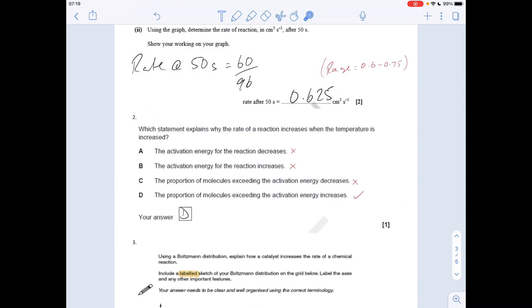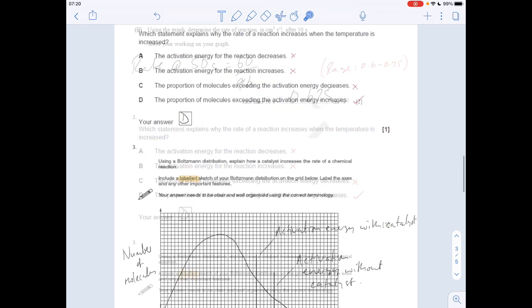Which statement explains why rate of reaction increases when temperature is increased? Activation energy doesn't change when you change the temperature—it's only a catalyst that changes activation energy, so the first two are wrong. The proportion of molecules exceeding the activation energy goes down or decreases? That's got to be wrong. So it's got to be D: the proportion of molecules exceeding the activation energy increases. Yep, that's right.